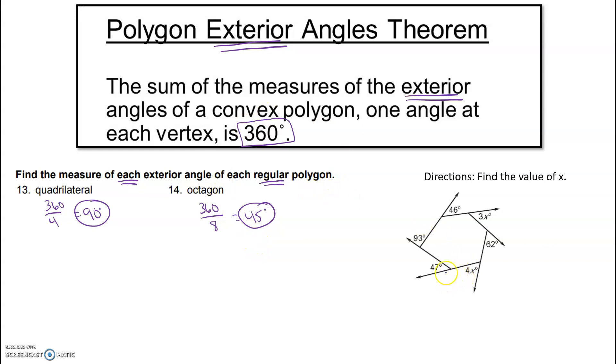Same concept here. Notice these are all exterior angles. All one, two, three, four, five, six of them, so it's a hexagon. All six of them should add up to equal 360. So we're going to set it up: 47 plus 93 plus 46 plus 3x plus 3x plus 62 plus 4x.